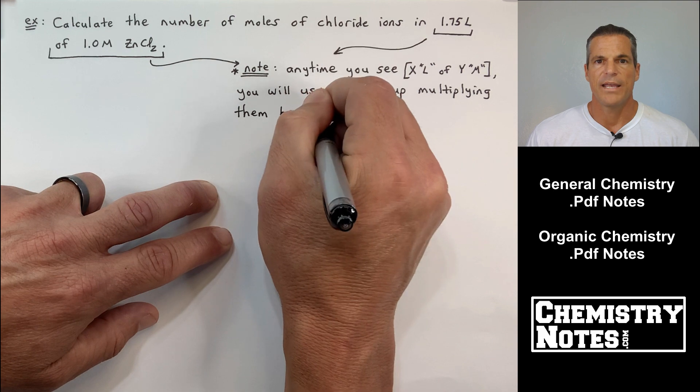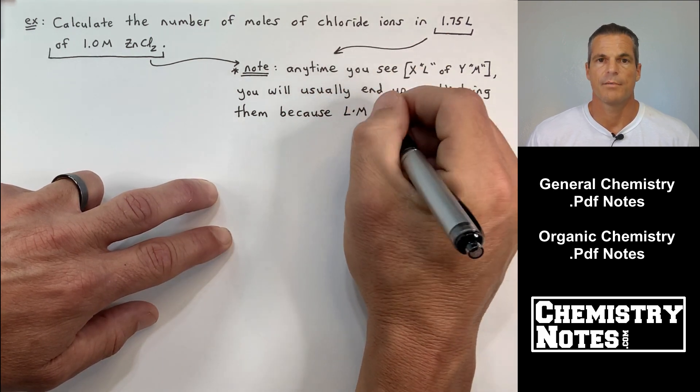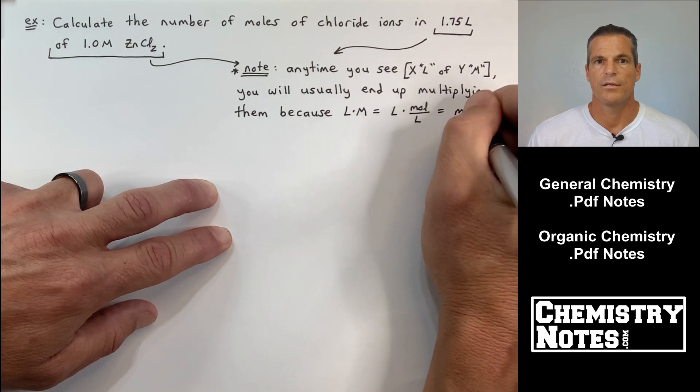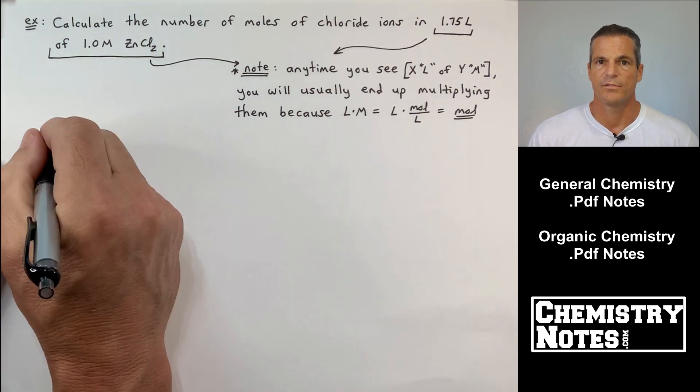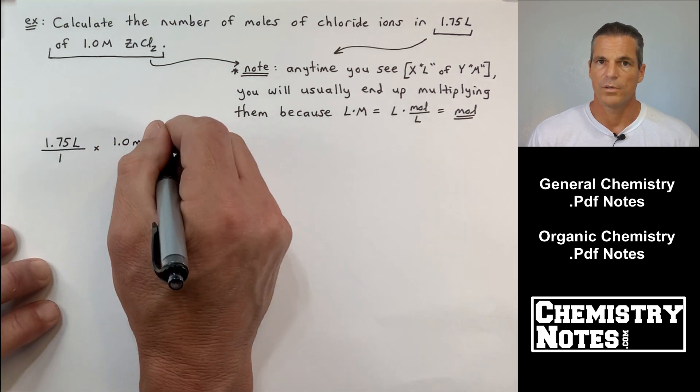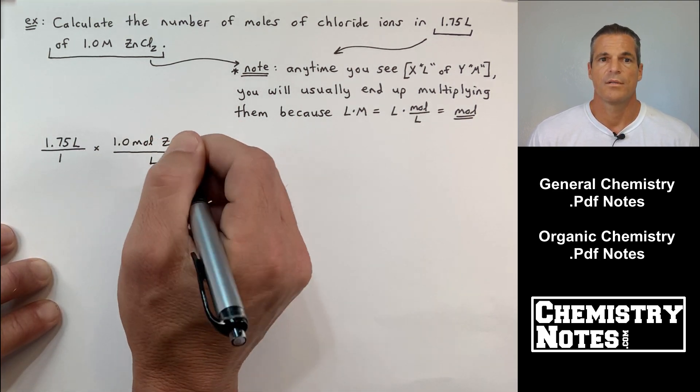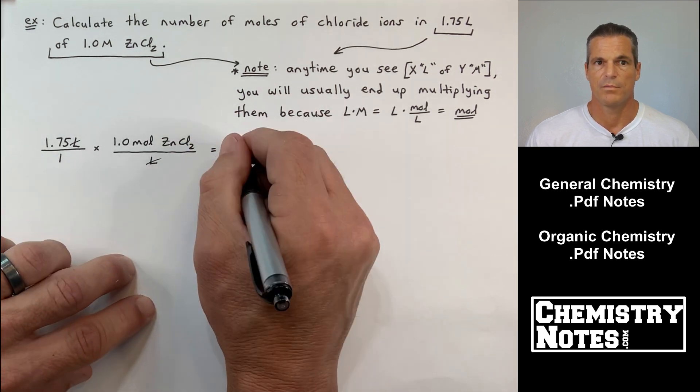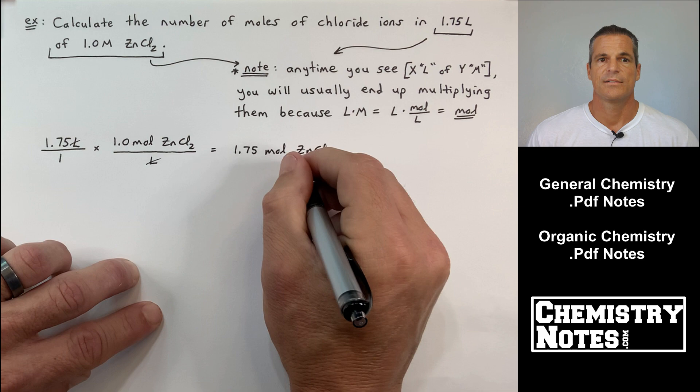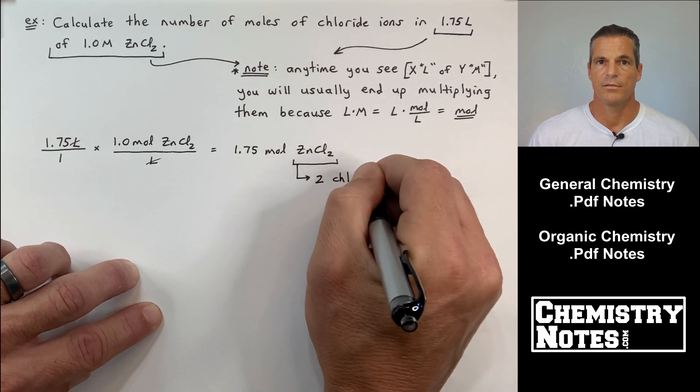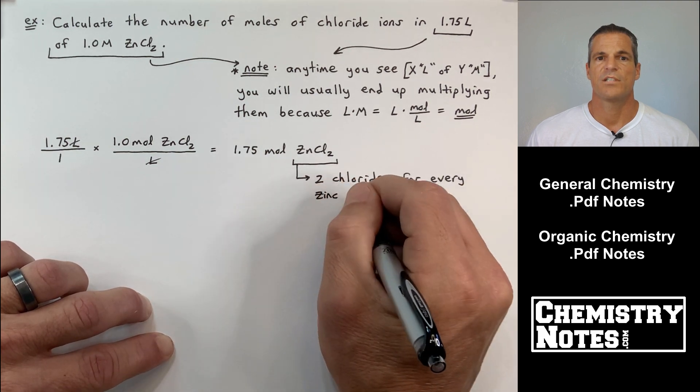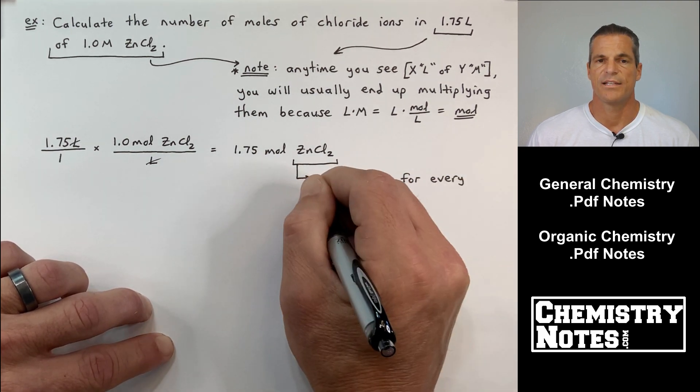So many of these molarity problems, they give you a volume in liters, and then right away it says of, and then it gives you molarity. So that's what my note is about here. Anytime you see blank liters, or milliliters, but blank liters of blank molar, you're usually going to end up multiplying those two together because doing so is a liter times a mole per liter, which gives you moles. And that's exactly what happens in this problem. See what we're doing? 1.75 liters over 1 times 1.0 moles per liter ZnCl2 gives me 1.75 moles of ZnCl2.